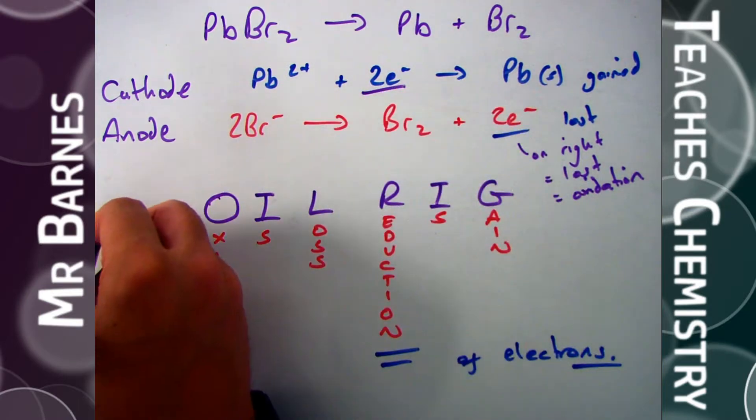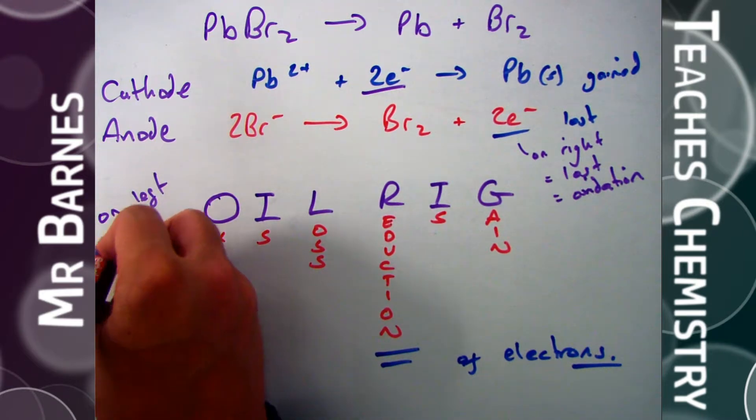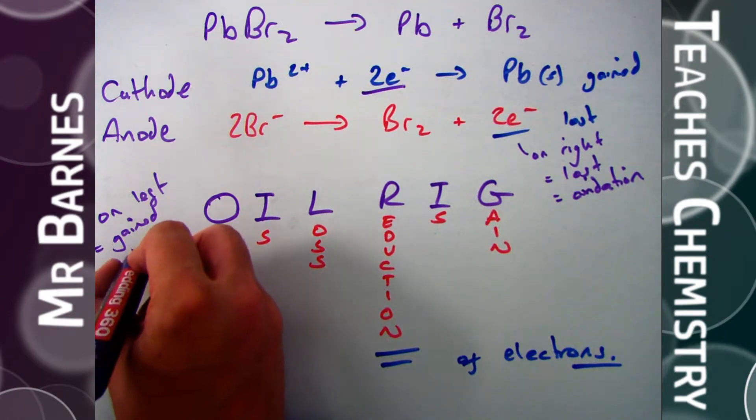So what you need to remember: if the electrons are on the left hand side, it's always gained, reduction is gain, so it's reduced. On the right hand side of the arrow, it's lost, therefore it's oxidized.